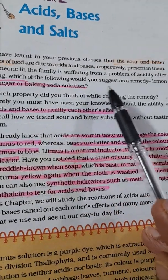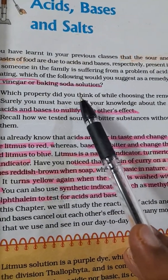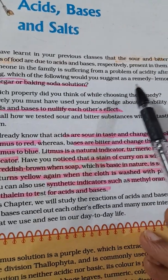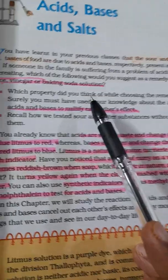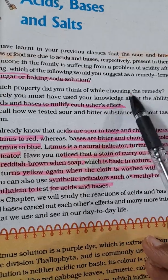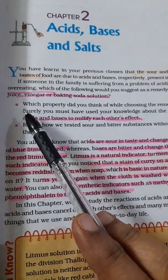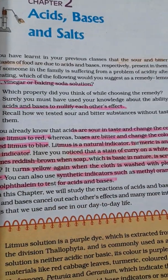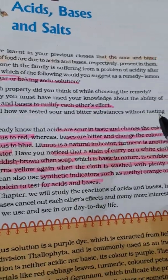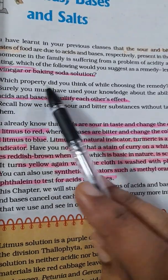If someone in the family is suffering from a problem of acidity after overeating — maybe you ate a lot at a hotel — and you are suffering from acidity and gas formation in your stomach, how would you cure it? Will you consume lemon juice, vinegar, or baking soda solution? If you have acidity, you cannot consume lemon juice because it contains citric acid, and vinegar also contains acid. Baking soda, however, is a base.